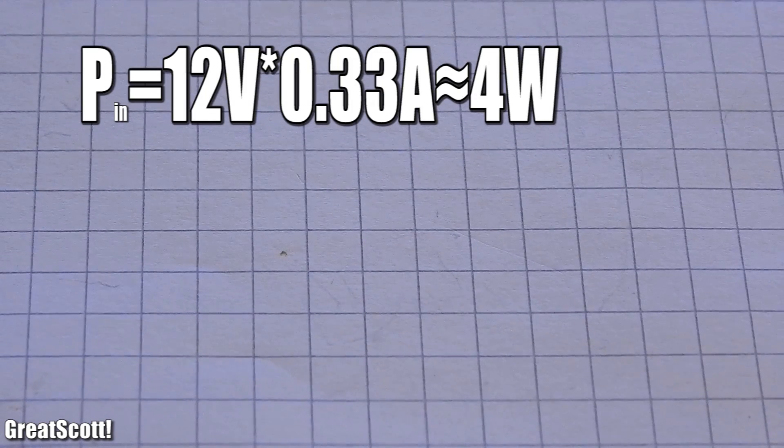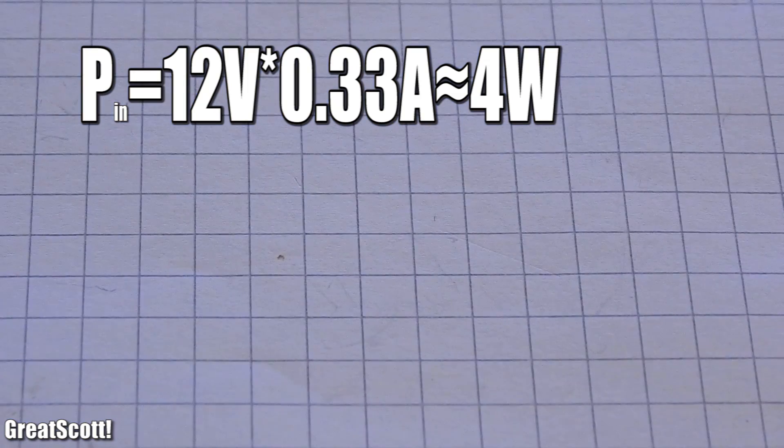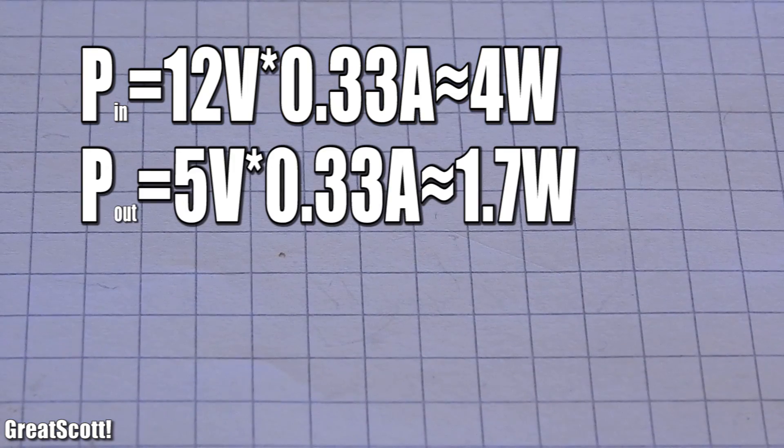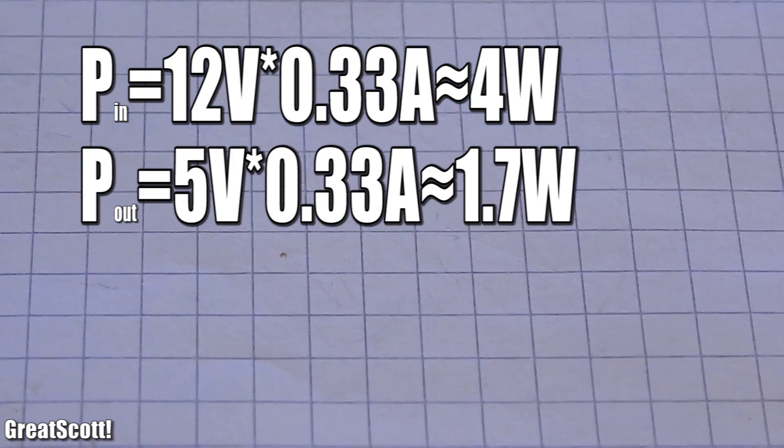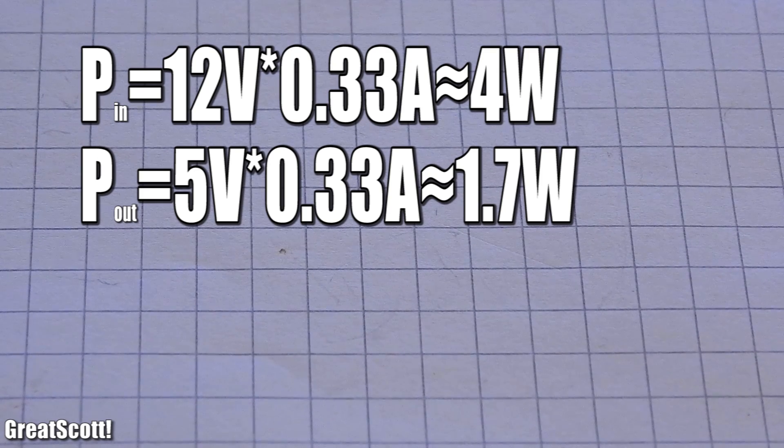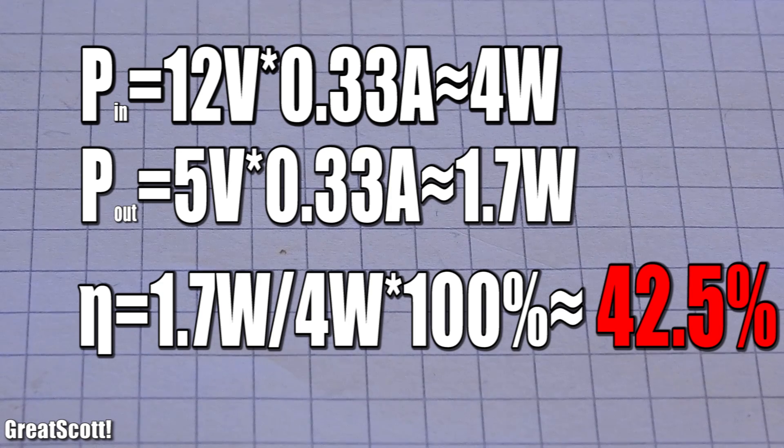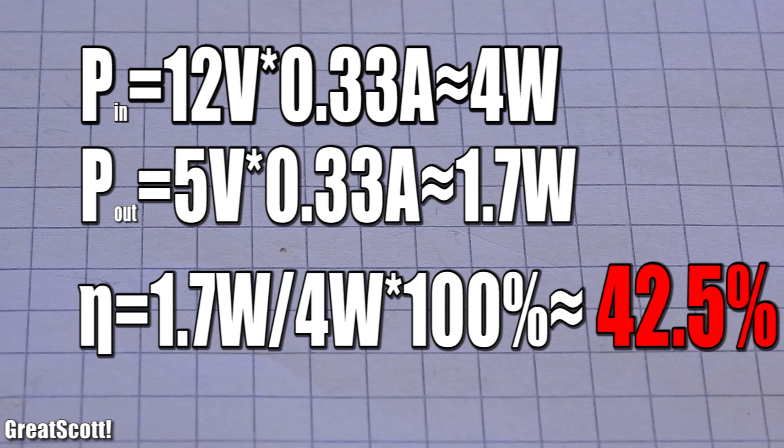The problem is the efficiency. Our input power is 12V multiplied by 0.33A, which is around 4W. Our output power is 5V multiplied by 0.33A, which is around 1.7W. The efficiency is output power divided by input power multiplied by 100%, so around 42.5%.